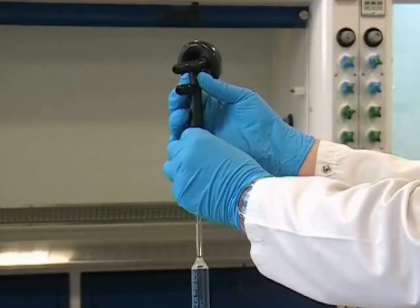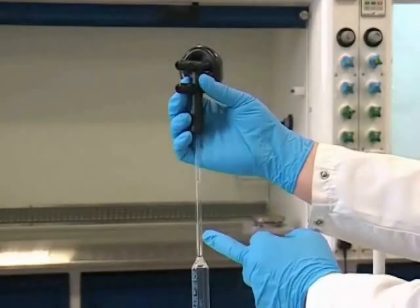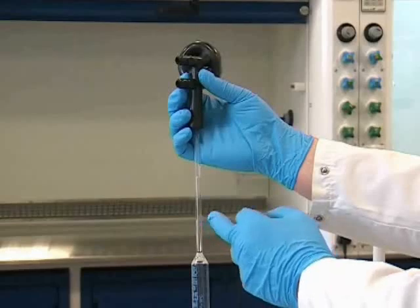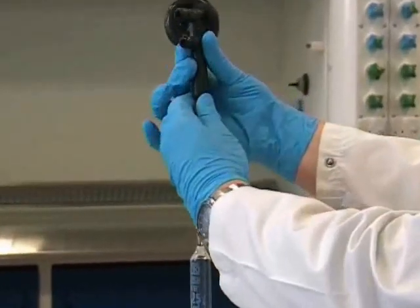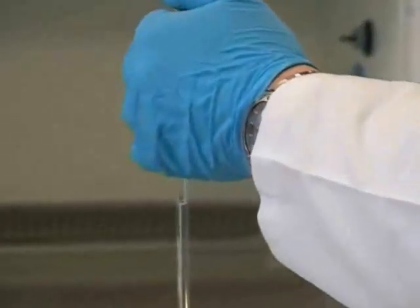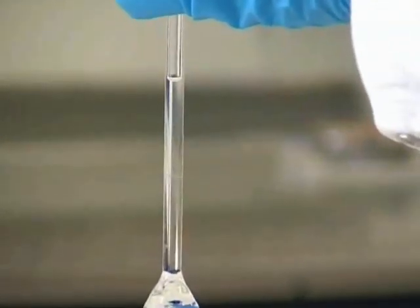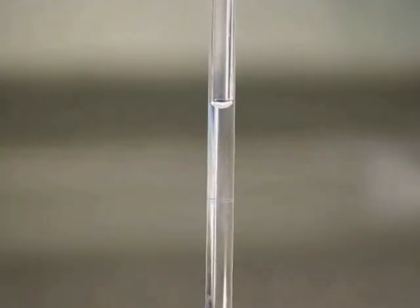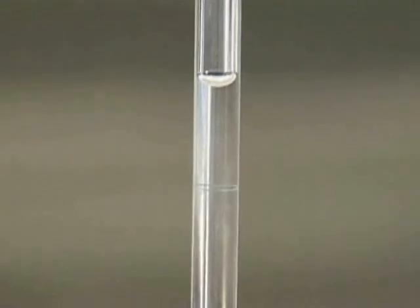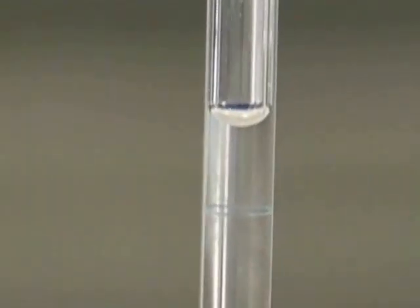Initially we're going to take more solution than we need. Here you can see the line on the pipette and the solution is clearly above that. Now we can gently remove the rubber bulb and place our thumb over the end of the pipette. By gently moving our thumb we can release the solution in a carefully controlled manner until the bottom of the meniscus is touching the line on the pipette.